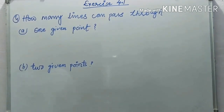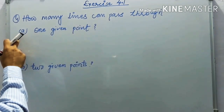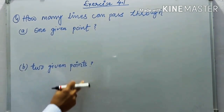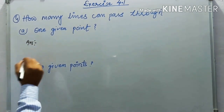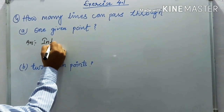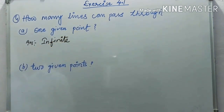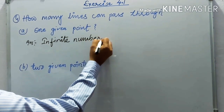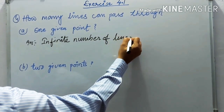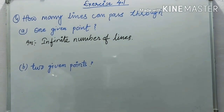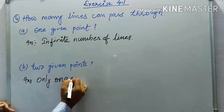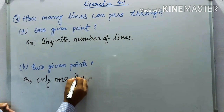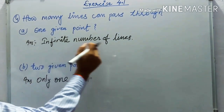Question four asks: how many lines can pass through a given point? First case — one given point: the answer is an infinite number of lines can pass through one point. Second case — two given points: only one line can pass through two given points.